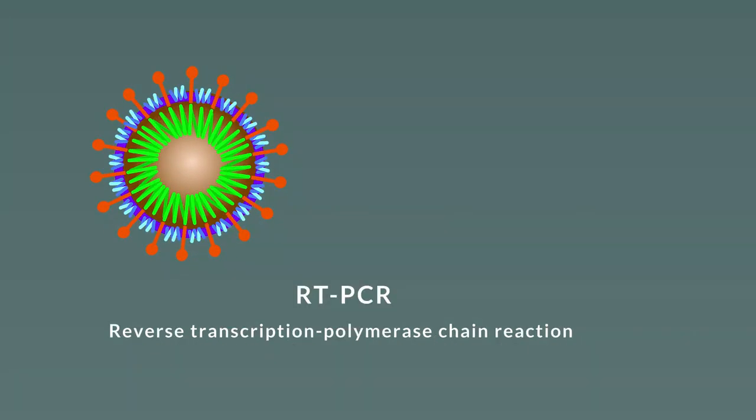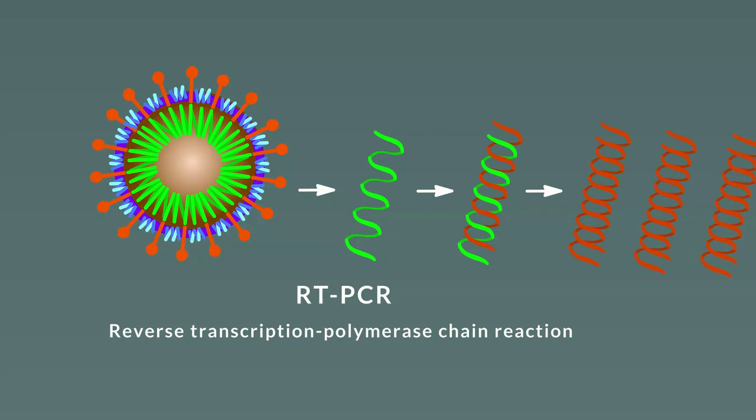The conventional test for the virus is reverse transcription polymerase chain reaction, or RT-PCR. This involves prep work in the lab to isolate the viral RNA, make a DNA copy from the RNA template, and then make multiple copies of DNA using polymerase chain reaction. From sample collection to result, the test usually takes a few hours to a couple of days.